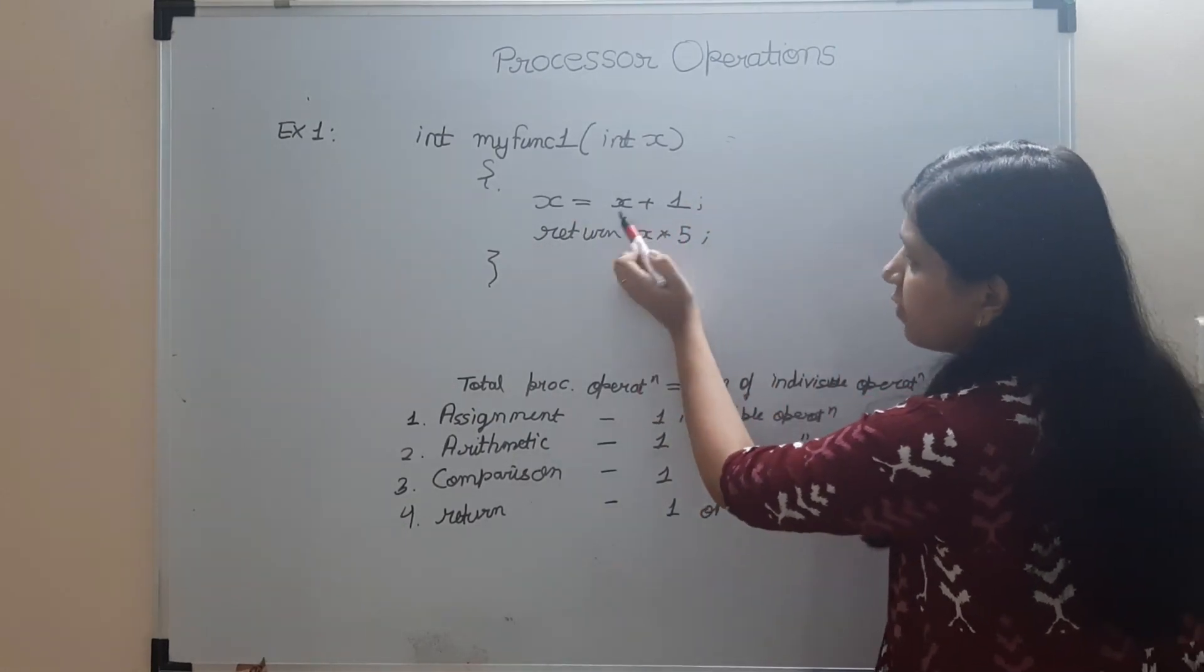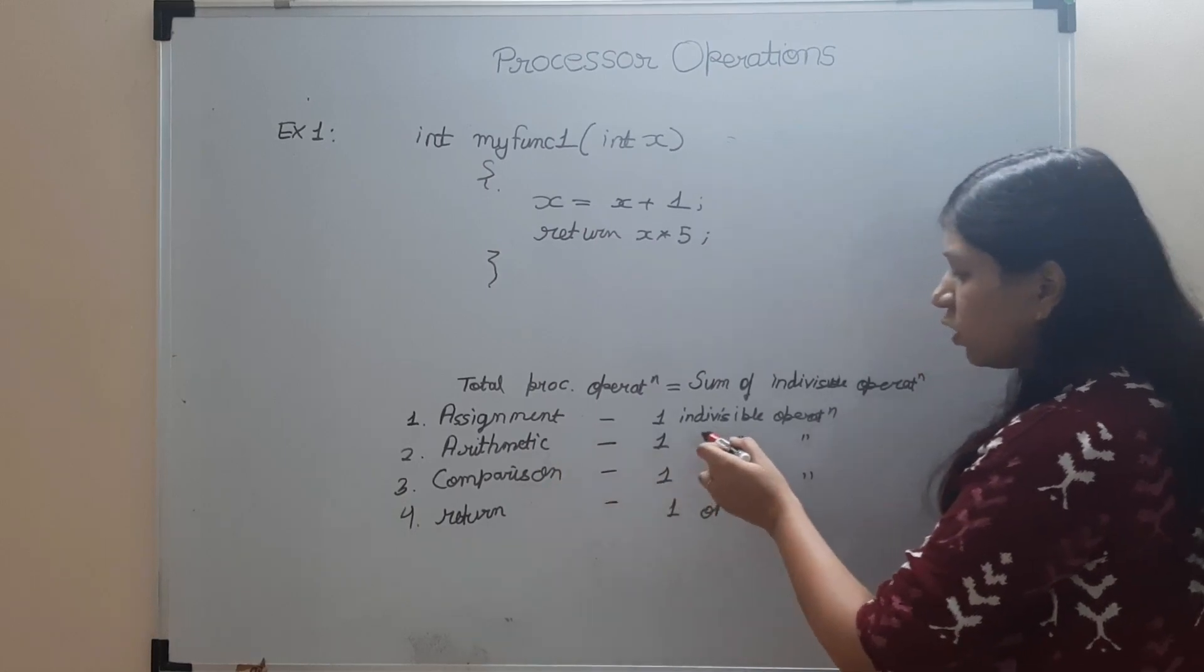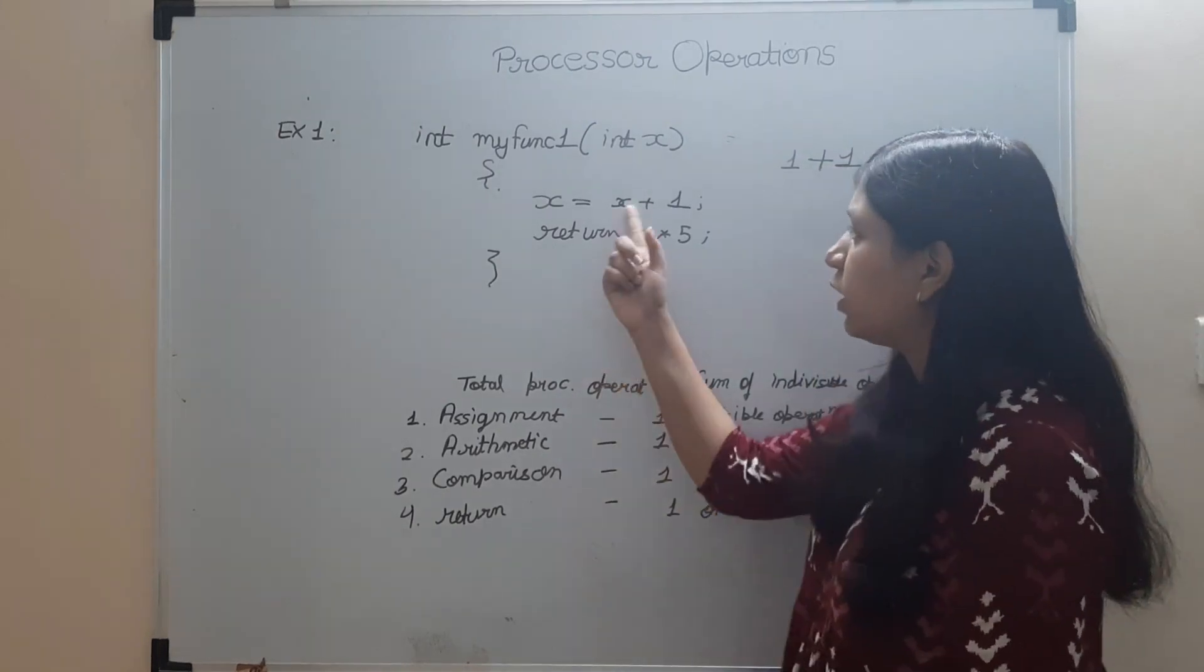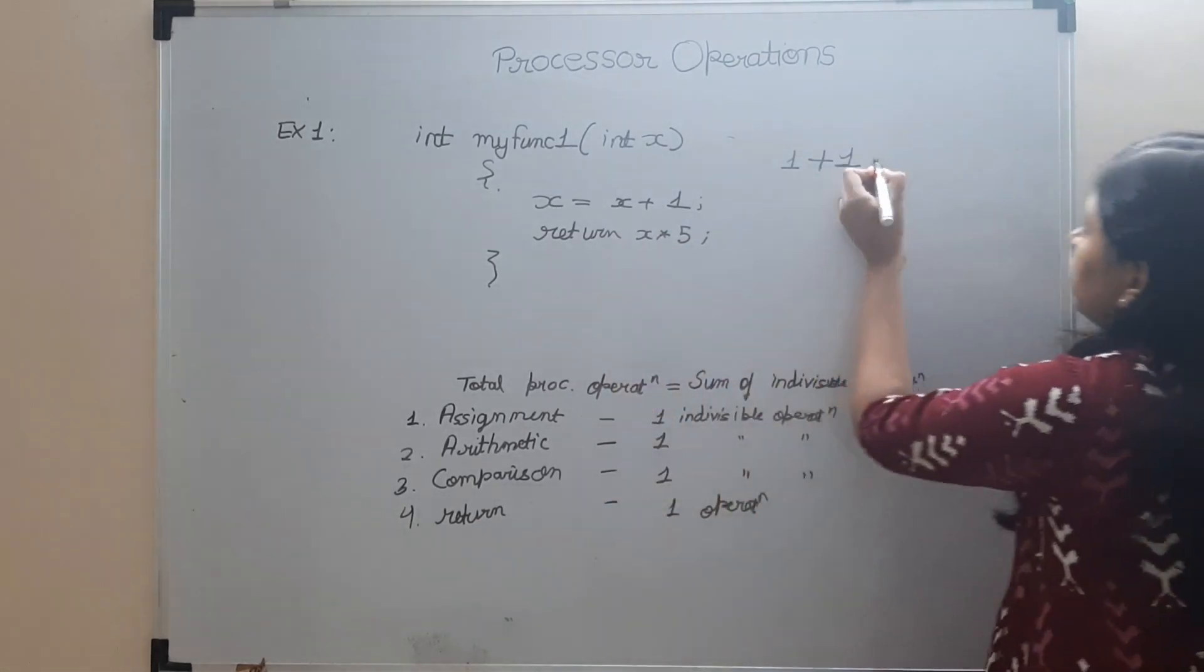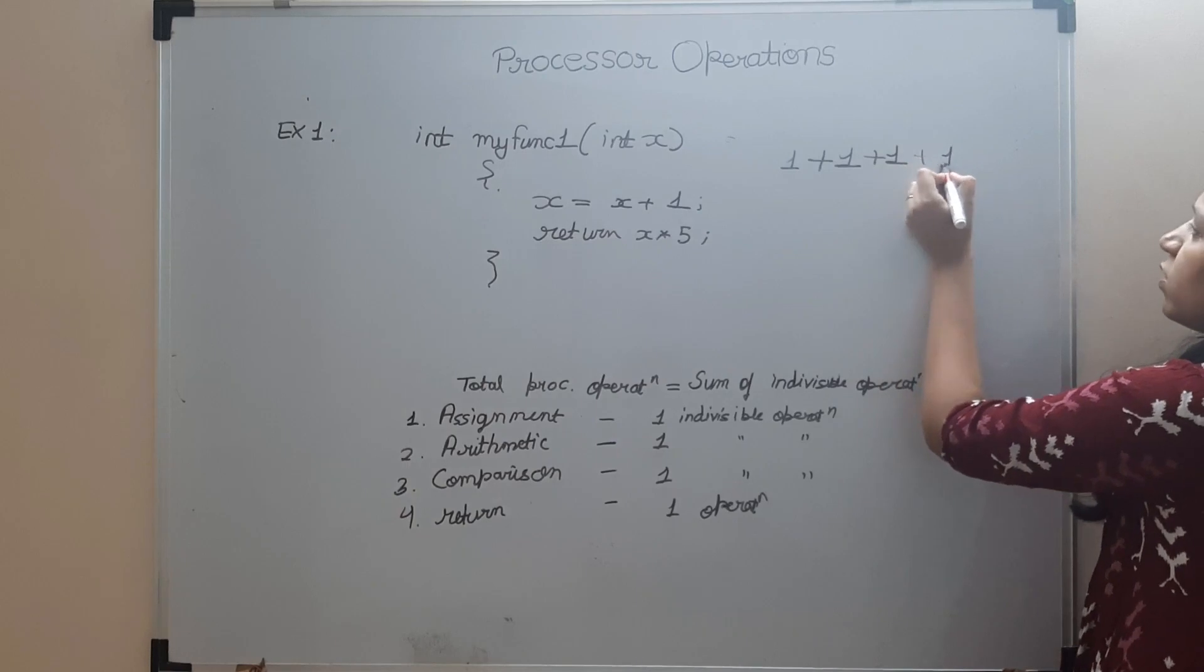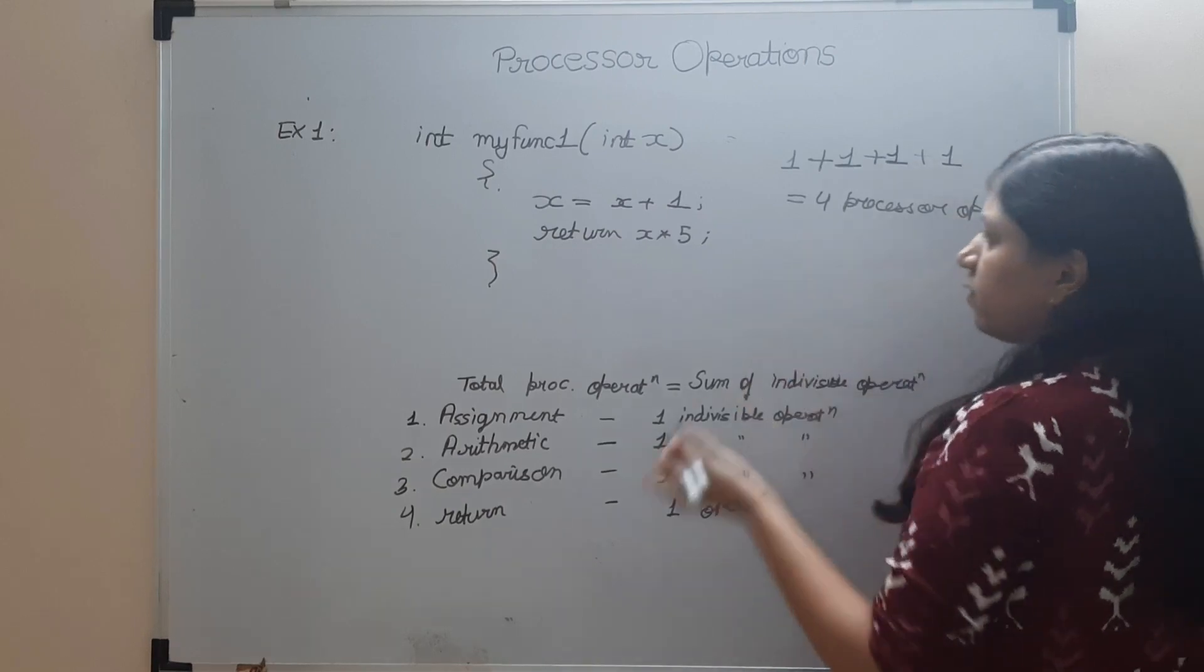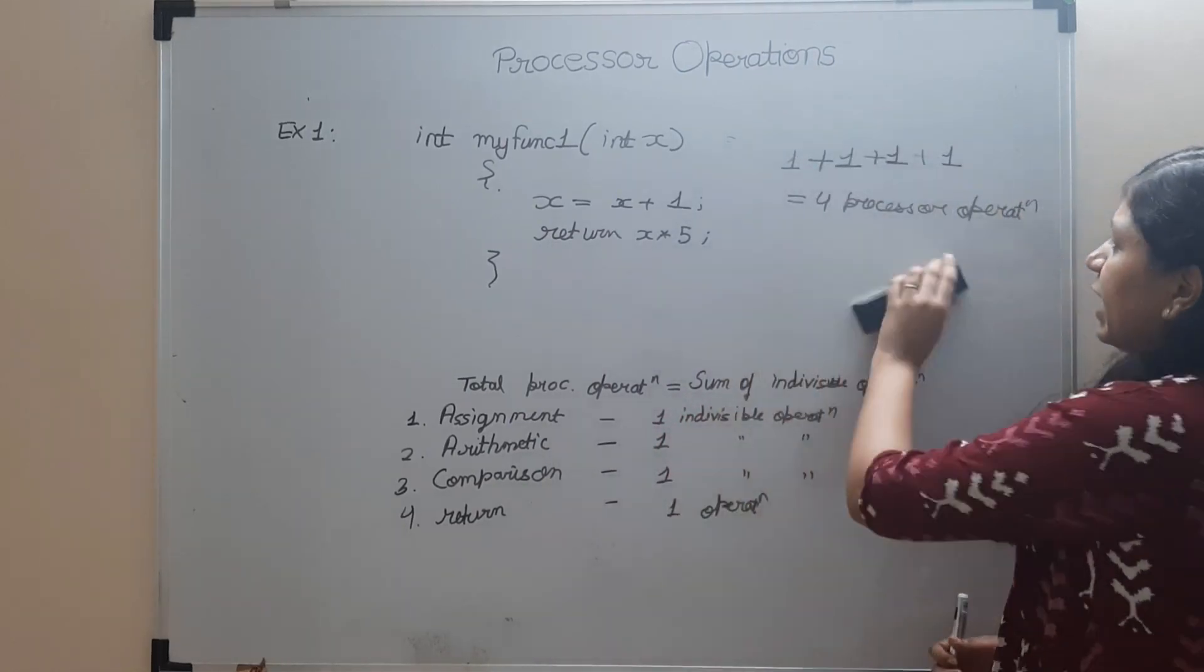Firstly, these are the two lines. This statement here, we have two operations. First is addition, so we know it is an arithmetic operation, it is going to take one operation. So x + 1 is one operation, plus assignment operation is the second indivisible operation, it is going to take one operation. So 1 + 1 = 2. And then this statement - what it is going to do? x * 5, so there is multiplication operation, plus 1. And then you are returning, so it is again going to take one operation, so plus 1. So what are the number of processor operations here? It is 4 processor operations. That's how you can calculate processor operations. You have considered all these indivisible operations as taking one processor operation.